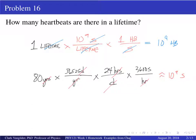If you made a different assumption you might get 2 times 10 to the 9 heartbeats — like if you said there are 2 billion seconds per lifetime. If you were trying to be more precise, the actual number of billions might be 2.5, so you'd have 2.5 billion heartbeats per lifetime, since we guessed one heartbeat per second. That's close enough.